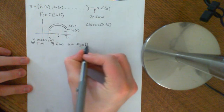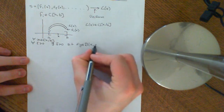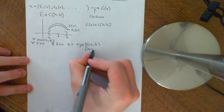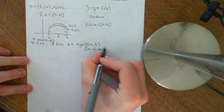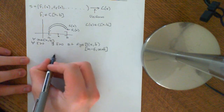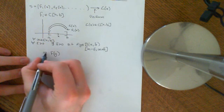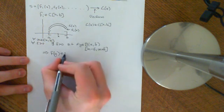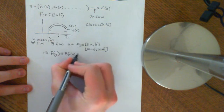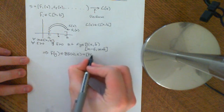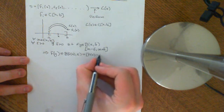Then, given any epsilon, there exists a delta greater than 0 such that if y is an element of the open ball around the point x of size delta — and since we're working in the real line, that open ball is the interval from x minus delta to x plus delta — then L(y) will be an element of the epsilon ball around the point L(x).